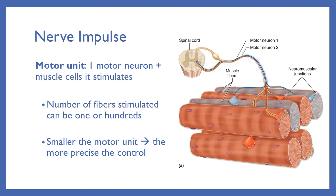We have a motor unit — that's one motor neuron plus the muscle cells it stimulates. The number of fibers stimulated can be one, or it could be hundreds. Because my fingers may need to make very small, precise movements, you want to not control too many muscle cells. A motor unit that goes to your leg to help with walking or running is going to be able to control a much larger number of muscle cells. The movement it does is bigger, it's not as precise, and it controls a much larger number of muscle cells.